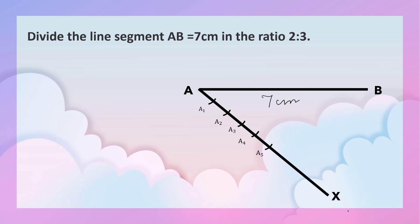Why 5 equal parts? 2 plus 3 is 5. So now join A5 to B.